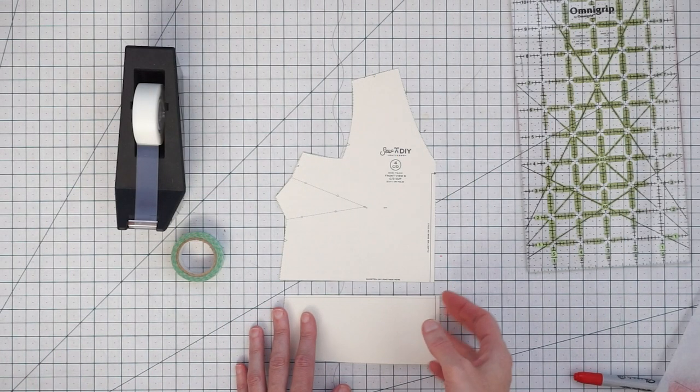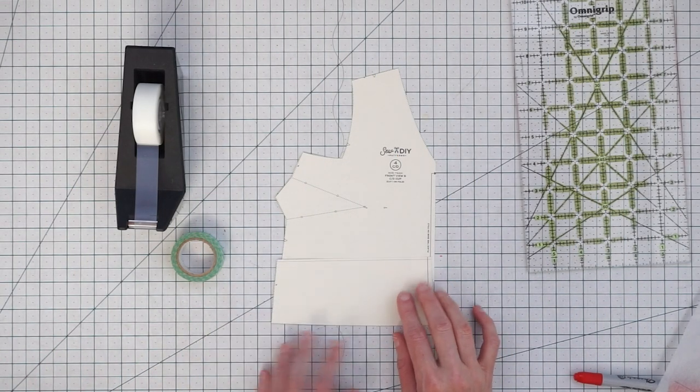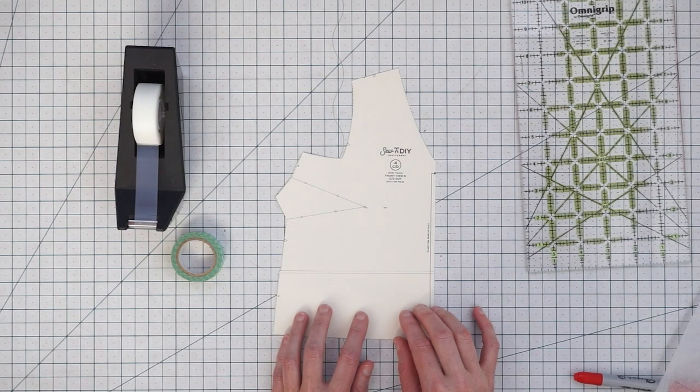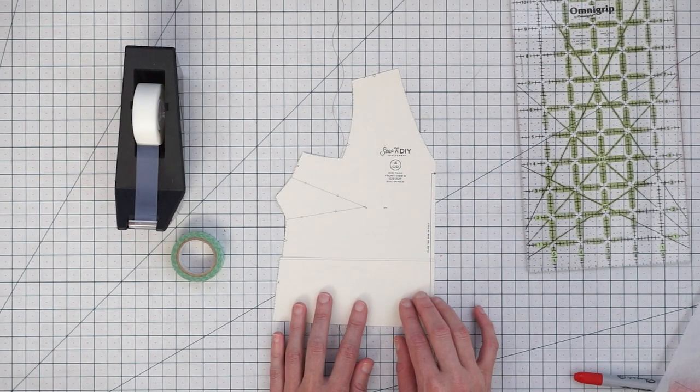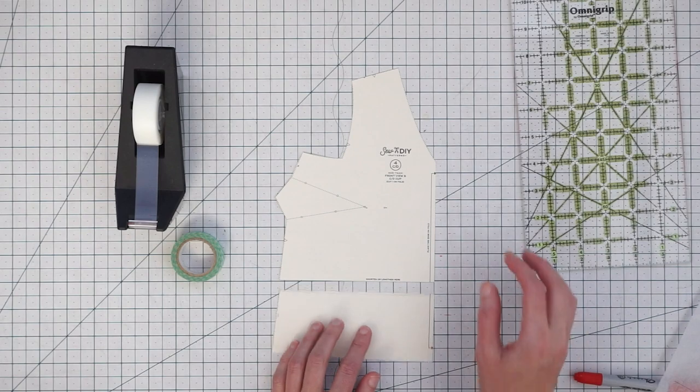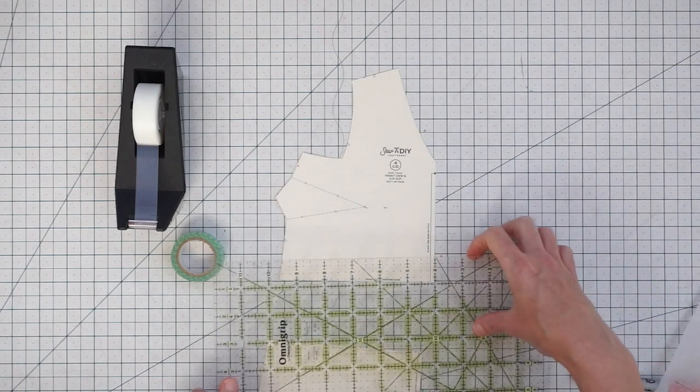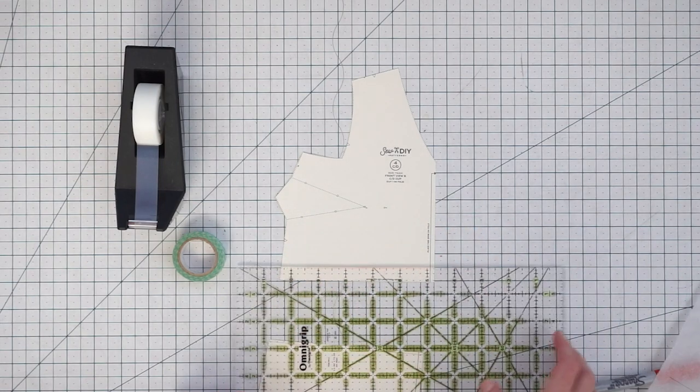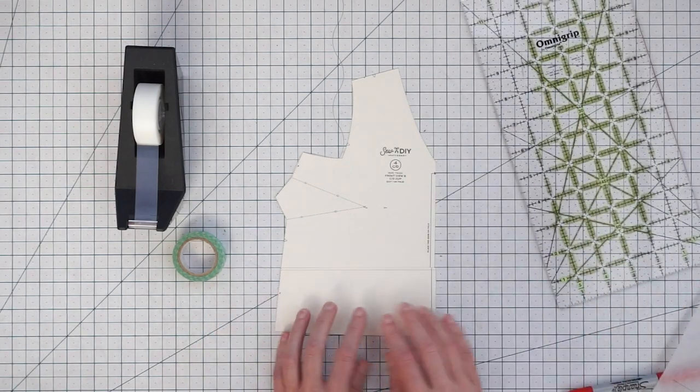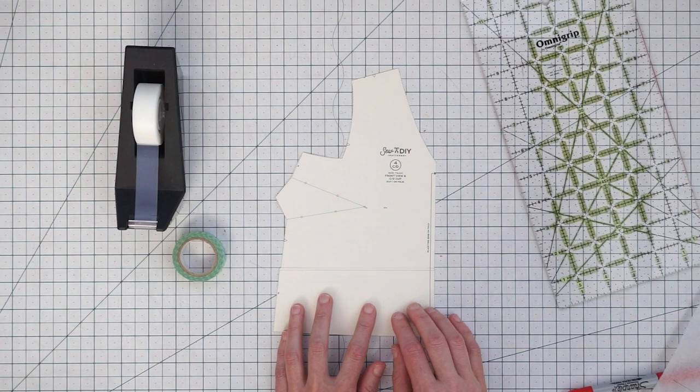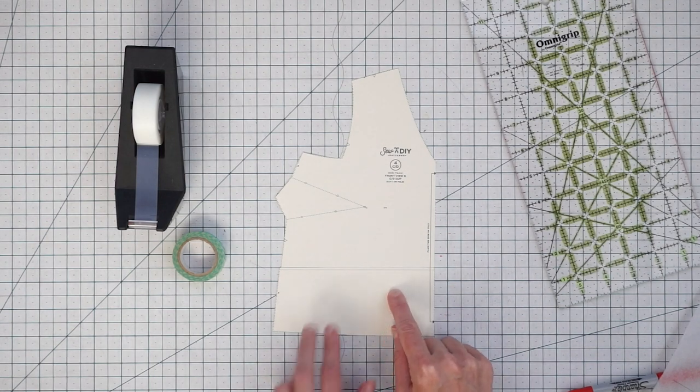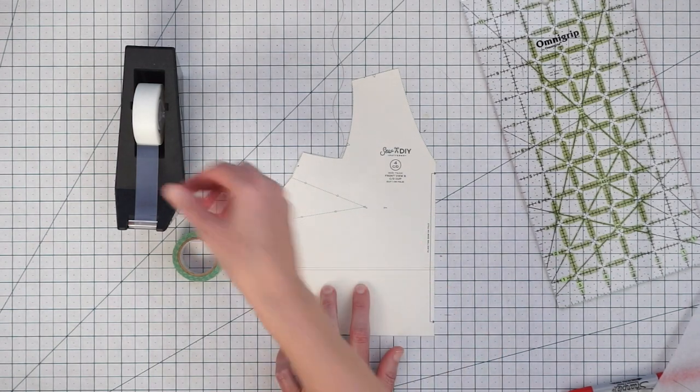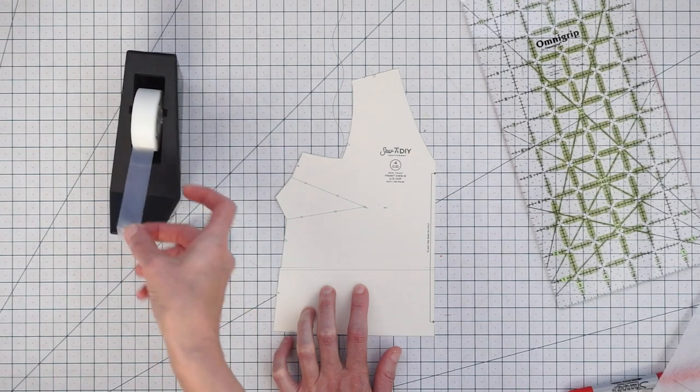If you're going to shorten you just overlap your pattern pieces and you slide it up however much you want. You can also create a little guide for yourself by using your ruler and drawing on the amount that you want to shorten the top and then you can use that guide when you're moving your pattern piece up. So all you do is move it up and then tape it in place.